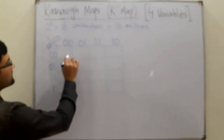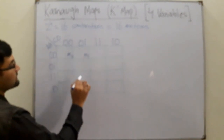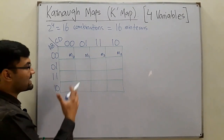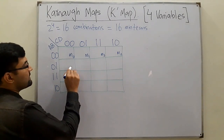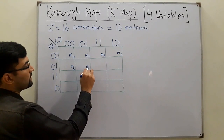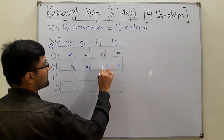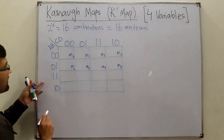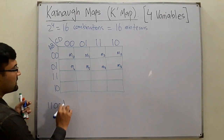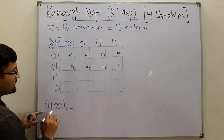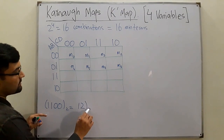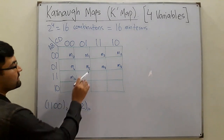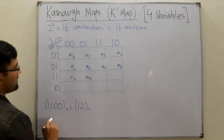Now the minterms: the cell at A=0, B=0, C=0, D=0 is m0; the next is m1, m2, m3. Then we have m4, m5, m6, m7. After m7, this is not m8 — we need to find its actual value. A=1, B=1, C=0, D=0 in binary is 12, so this is m12, and the next is m13.